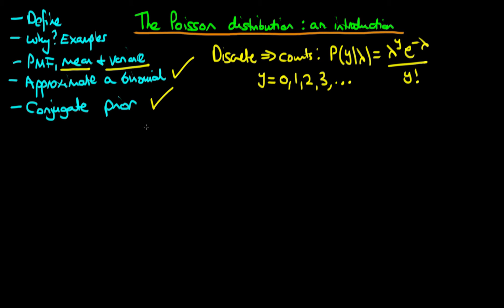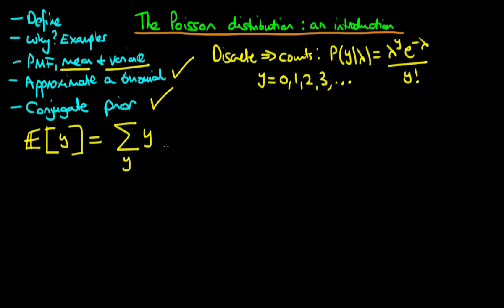So how do we derive the mean of a Poisson distribution? We're looking for the expected value of y. Since the Poisson distribution is a discrete distribution, we get this by summing over all values of y — where y takes on the values 0, 1, 2, 3, up to positive infinity — summing y times the probability mass function: y times lambda to the power y times e to the power minus lambda, all divided by y factorial.